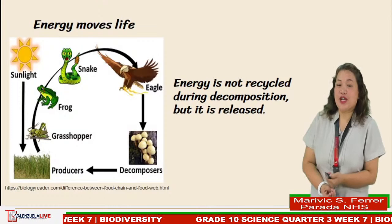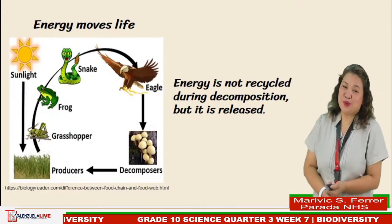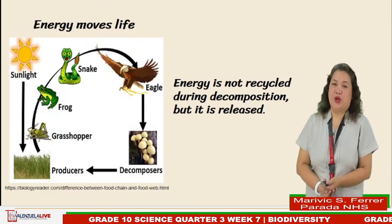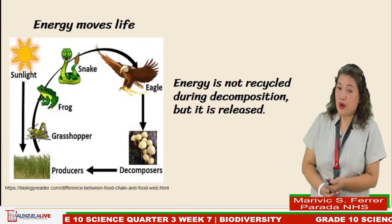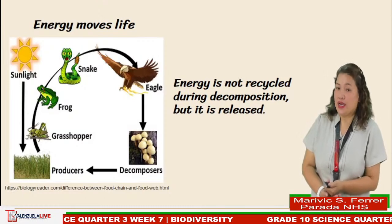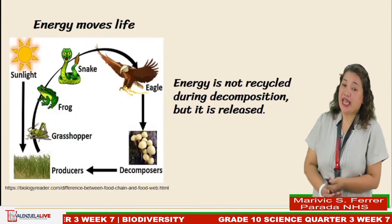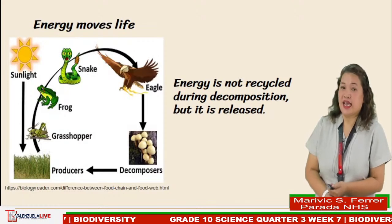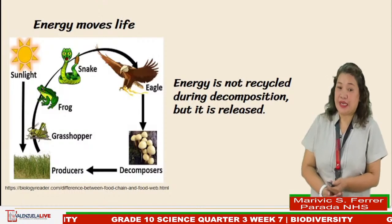Different plants and animals and species are linked to one another through food chains. The decomposers, which include bacteria, fungi, molds, worms, and insects, break down waste and dead organisms and return the nutrients to the soil, which is then taken up by the producers. Energy is not recycled during decomposition, but it is released.